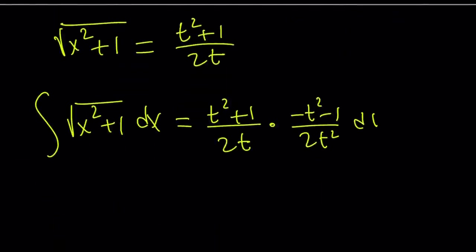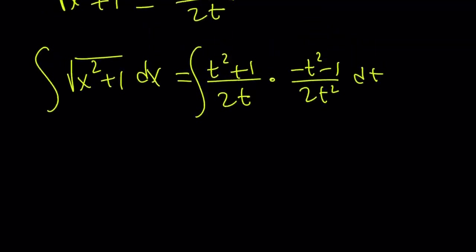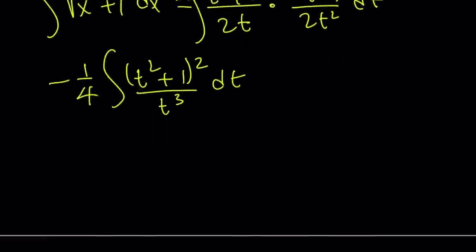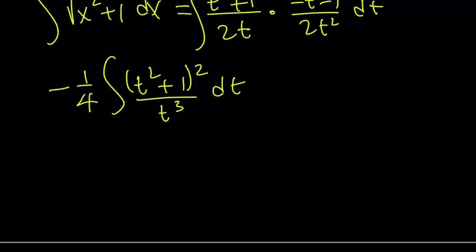So that radical expression actually turns into something nicer — a polynomial divided by a monomial, so it's easy to separate. We can go ahead and take out a negative one-fourth. And then inside we're going to have t squared plus 1 squared divided by t to the third power dt. Now let's expand t squared plus 1 squared. That is t to the fourth plus 2t squared plus 1 over t cubed dt.